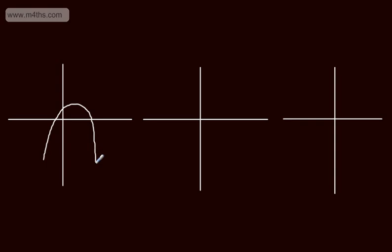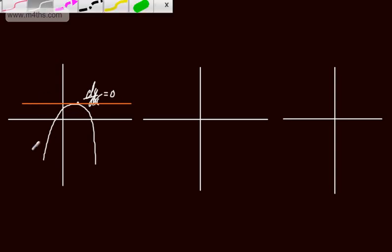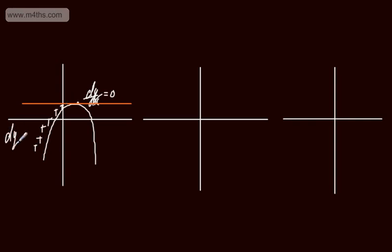A nice graph to show a maximum would be a negative quadratic, so our parabola would open downwards. This is where dy by dx, the gradient function, gives us a value of zero — the tangent to the curve at this x-coordinate is parallel to the x-axis. To the left of the stationary point we have an increase in function, so dy by dx will be greater than zero. To the right we have a negative gradient, so dy by dx will be less than zero. We call this a maximum.